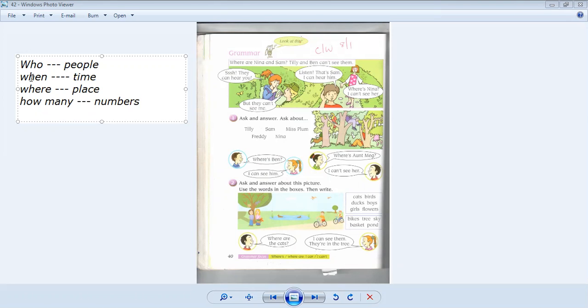We use these words for asking questions. For example, we use 'who' for asking about people. Who is your father? Who is your English teacher? Who is your French teacher? Who is your friend? We use 'who' for asking about people.